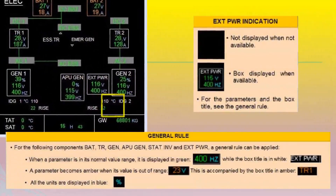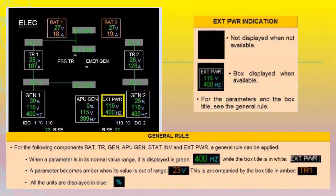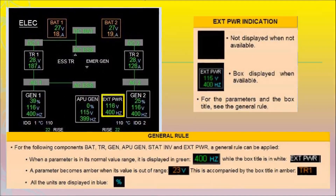For external power indication, the parameter shows when available. In its normal value range it is displayed in green while the box title is in white. It is not displayed when not available.